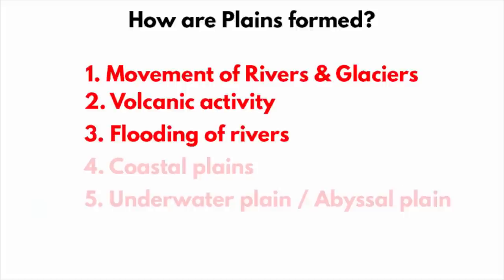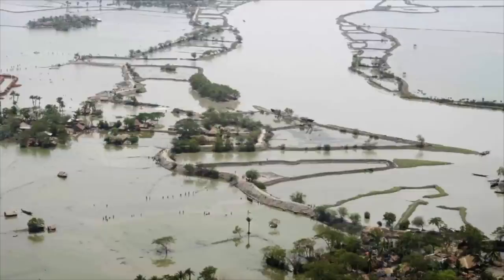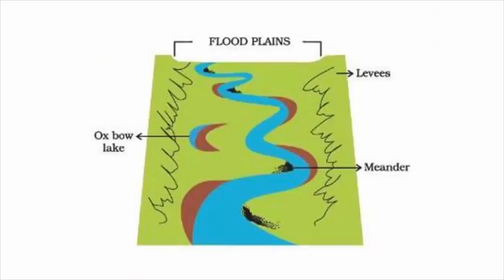Even flooding of rivers can form plains. When a river floods, it overflows its banks. The flood carries mud, sand and other sediments out of the riverbed and onto the nearby areas. After the water withdraws, the sediment remains. If a river floods repeatedly over a period of time, the sediments brought by the river will eventually turn into a floodplain.